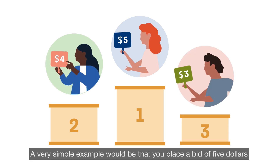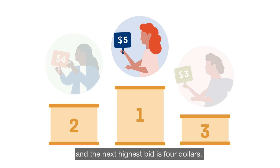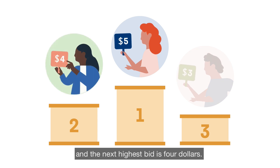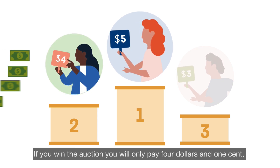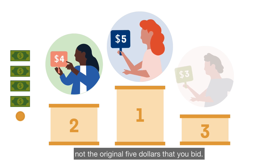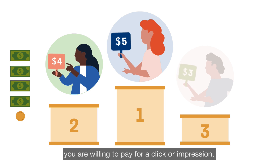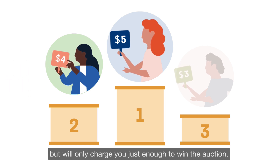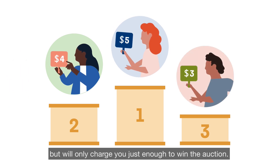A very simple example: you place a bid of five dollars, and the next highest bid is four dollars. If you win the auction, you will only pay four dollars and one cent, not the original five dollars that you bid. This second price method lets you set your bid at the maximum price you are willing to pay for a click or impression, but will only charge you just enough to win the auction.